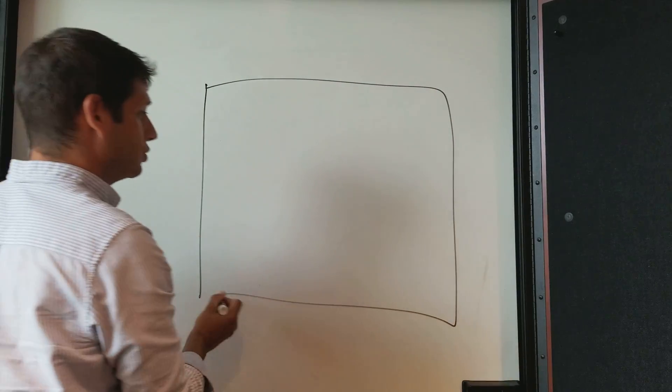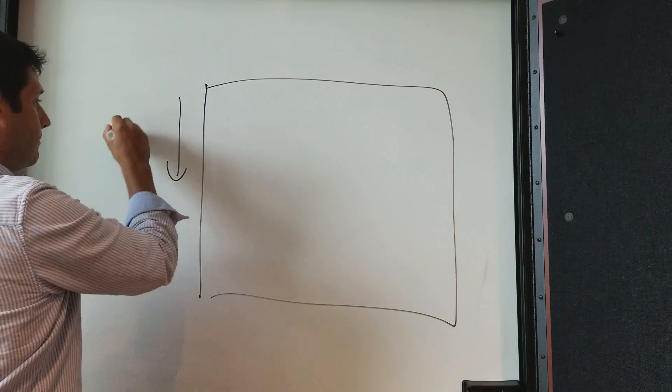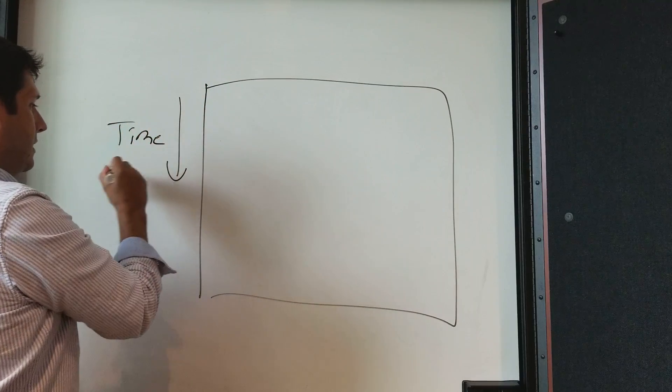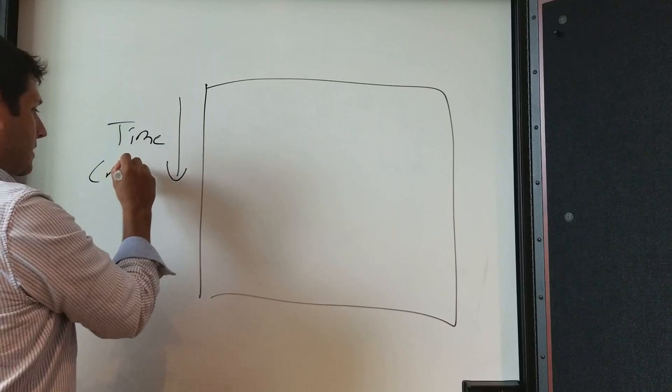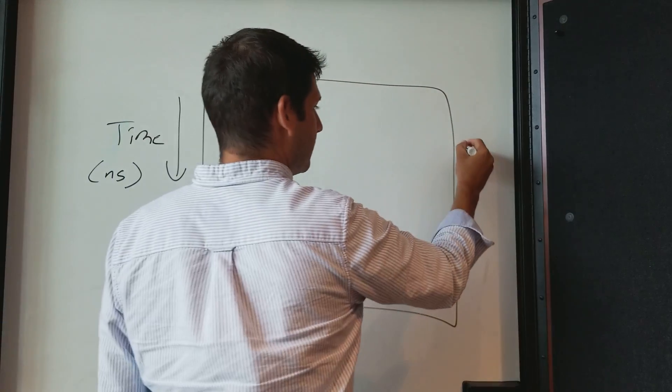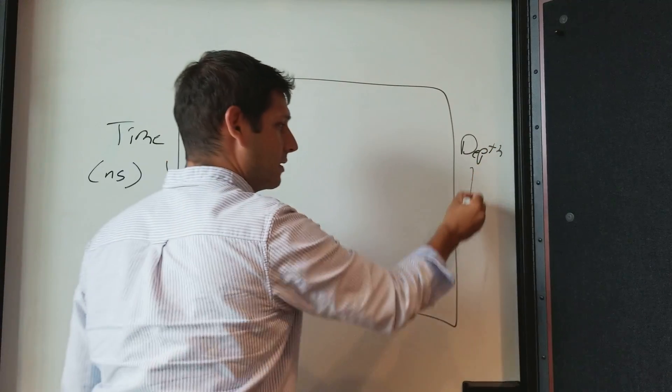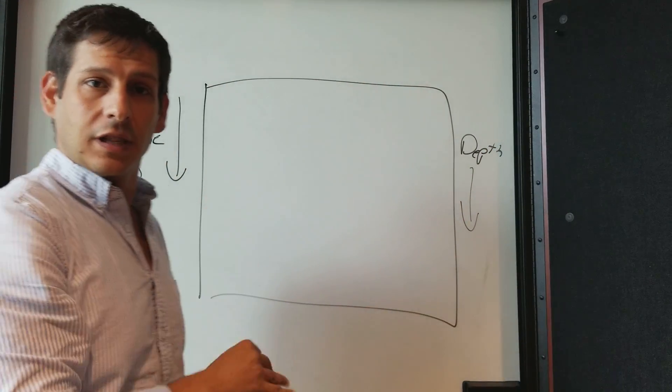And I want to talk about specifically when you think about your time window. This is your GPR profile. Down this way is time and that's in nanoseconds. If you convert time, then it would be in depth. But in order to convert time into depth, you need an accurate velocity.